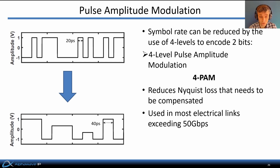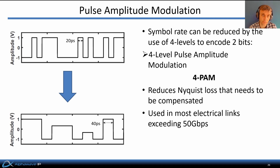Compensating a very high amount of channel loss can become very challenging. To help with that, the symbol rate can be reduced by the use of four levels to encode two bits. For example, a two-level signal encoding one bit per symbol at a symbol rate of 20 picoseconds can instead use half as many symbols with twice the symbol time — 40 picoseconds — to encode the same amount of information. This type of encoding is called four-level pulse amplitude modulation, or 4PAM, and because it reduces the symbol rate by half, it generally reduces the Nyquist loss that needs to be compensated by the equalizers. 4PAM is used in most modern electrical links exceeding 50 gigabits per second.